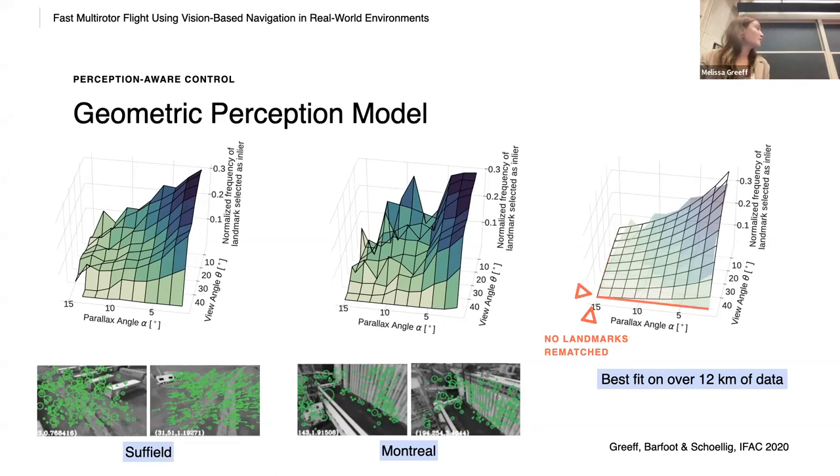So firstly, in all our data, at a parallax angle or perspective change of more than 15 degrees, we have never successfully matched the landmark. Secondly, at a view angle of around 45 degrees, we have never matched the landmark. We then take a frequentist approach and let the normalized frequency represent a probability of a landmark being matched as an inlier. And we fit a best fit model to associate the probability with a parallax and view angle.